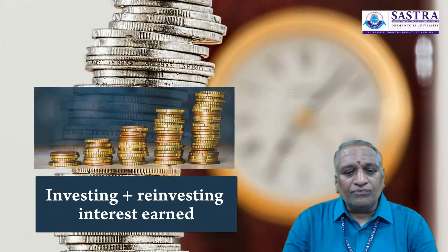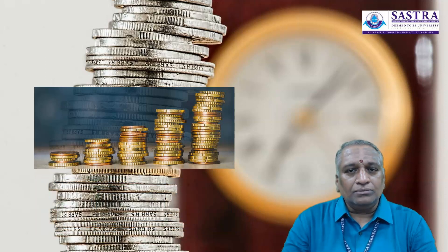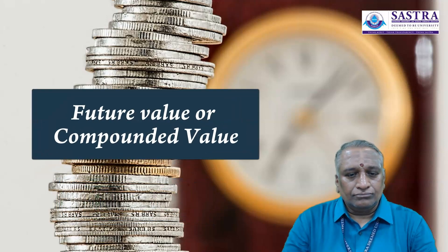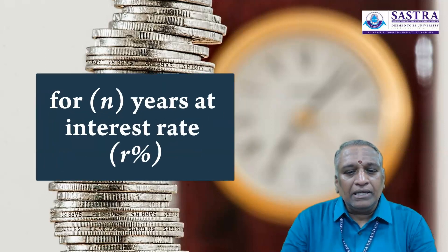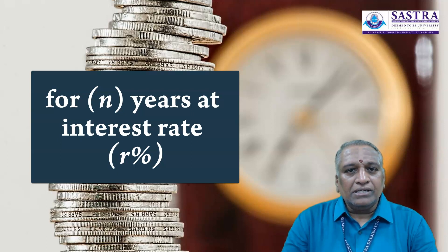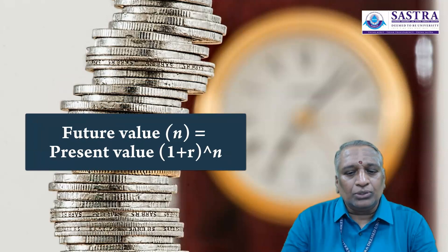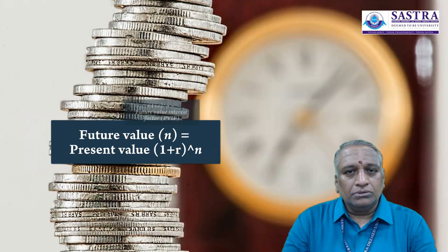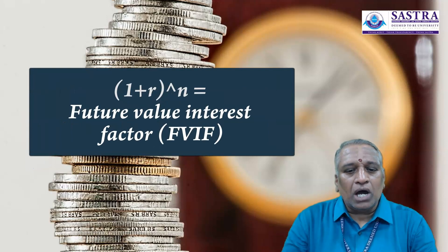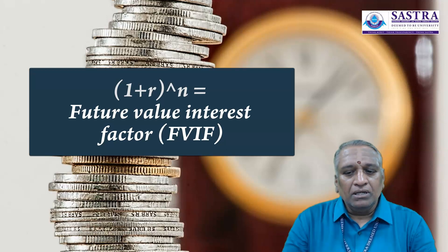The process of investing money as well as reinvesting the interest earned thereon is called compounding. The future value, or compounded value, of an investment after n years when the interest rate is r percent, is: Future Value (n years) = Present Value × (1 + r)^n. In this equation, (1 + r)^n is called the future value interest factor, or simply the future value factor.